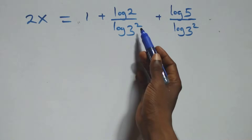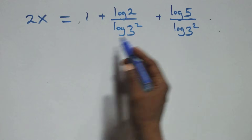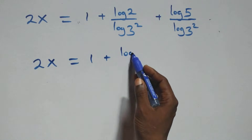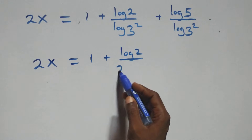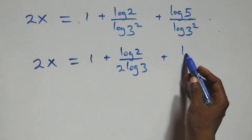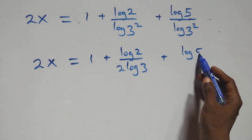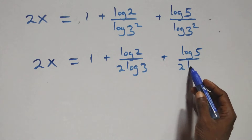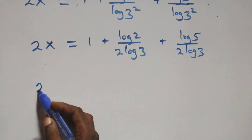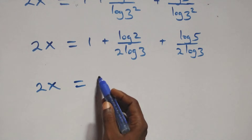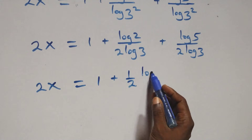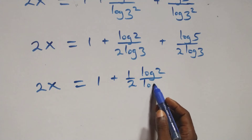At the next step we apply the power rule of logarithms: the exponent 2 comes out front in both denominators. We have 2x equals to 1 plus log 2 over 2 log 3, plus log 5 over 2 log 3. We can rewrite this as 2x equals to 1 plus one-half times log 2 over log 3, plus one-half times log 5 over log 3.